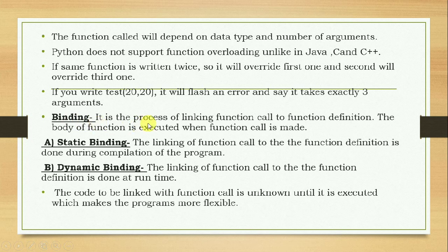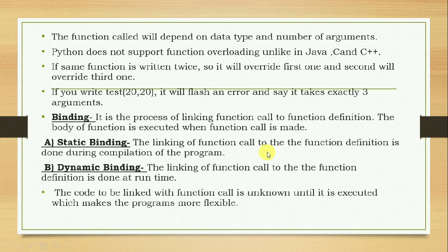Binding is the process of linking the function call to the function definition. The body of the function is executed when the function call is made. There are two types: static binding and dynamic binding. Static binding means linking the function call to the function definition during the compilation of the program. Dynamic binding is the linking of function call to the function definition at runtime — the code to be linked is unknown until it is executed, which makes the program more flexible.